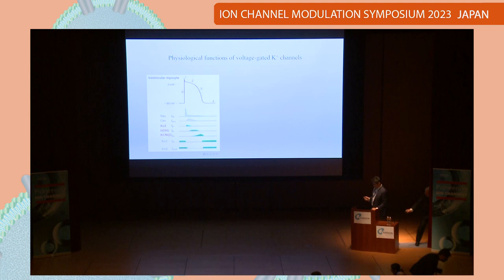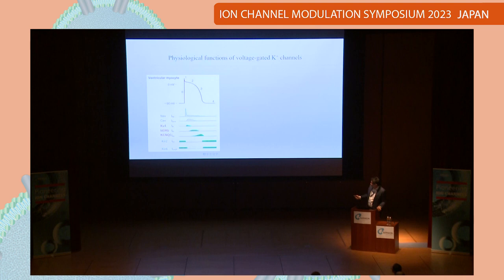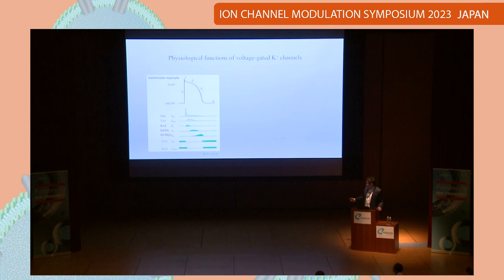The physiological functions of voltage-gated potassium channels are relatively well known — they are important for repolarization of action potentials. This is the ventricular myocyte action potential, and many ion channels are involved in shaping it. At least three types of voltage-gated potassium channels are known to be involved: KV4, HERG, and KCNQ1.